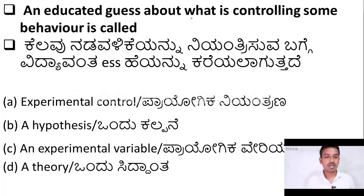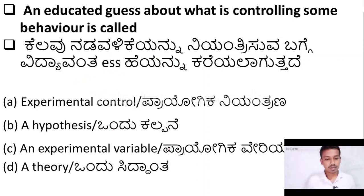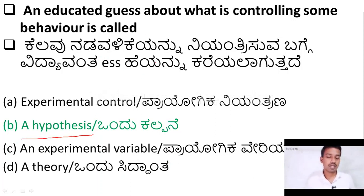The next question: an educated guess about what is controlling some behavior is called — option A: experimental control; option B: hypothesis; option C: an experimental variable; option D: theory. The right answer is a hypothesis.